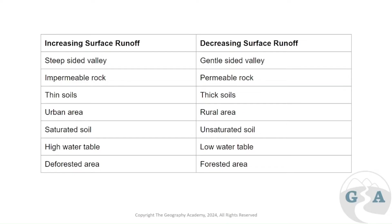Impermeable rock is rock that water cannot pass through, or has a very hard time passing through its pores or cracks, so the water usually flows over the top. Permeable rock is the opposite — it's still a bit slow compared to soil, but water can pass through it a lot more easily, and therefore surface runoff is less likely.